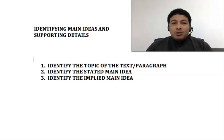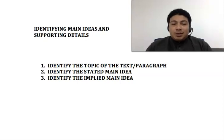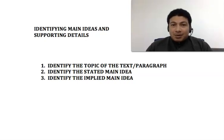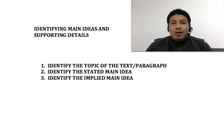First, we are going to look into identifying main ideas. There are three things that we need to take note when identifying main ideas in a paragraph or in a reading text. The first thing is to identify the topic of the text or the topic of the paragraph. This is quite easy because normally a reading text or an article will have a topic — the heading. That is the topic.